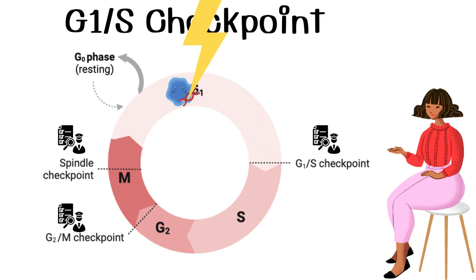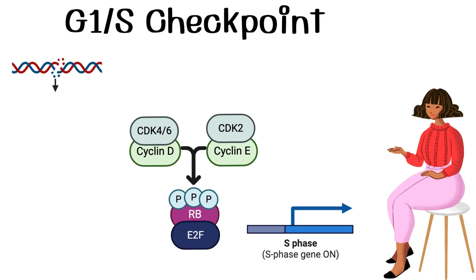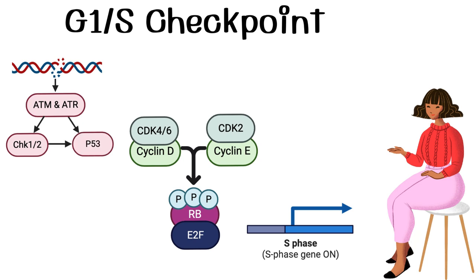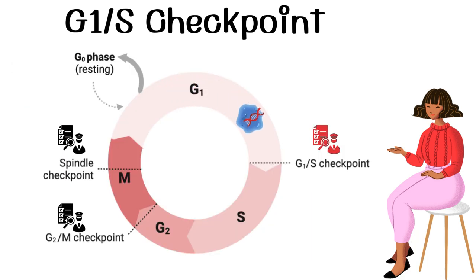DNA damage from external factors such as UV radiation causes single-stranded DNA breaks that can turn into toxic double-stranded breaks. To prevent this, the G1/S phase checkpoint is triggered to halt progress through the cell cycle to allow for repair mechanisms to take over. DNA strand breaks are sensed by proteins called ATM and ATR. These phosphorylate their downstream targets CHK1 and CHK2. All four of these proteins target a tumor suppressor transcription factor called P53. P53 transcribes P21, which inhibits the cyclin E-CDK2 complex from forming, preventing retinoblastoma from getting phosphorylated and thus stopping transcription of the S phase genes and preventing transition into the S phase.